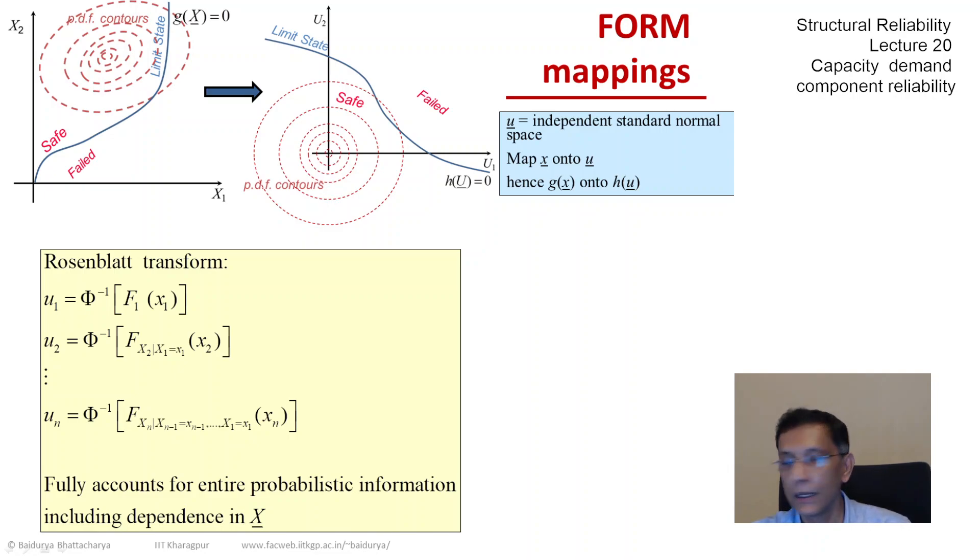This uses the full probabilistic information including all dependent structure among the x's, but it's more ideal in nature because it's practically very, very difficult to obtain the joint CDF of order n among the x's in a functional form.